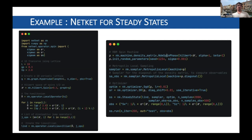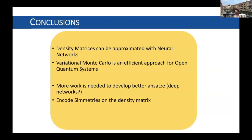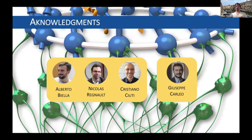In conclusion, density matrices can be approximated with neural networks, and variational Monte Carlo is an efficient approach for these systems, even if many improvements can be made on the method. More work is surely needed to develop better ansätze — particularly it would be nice to use deep networks while keeping positive definiteness — and we still need to start encoding symmetries on the density matrix, and explore autoregressive models among other things. I would like to thank my collaborators on the work I showed you, from universities in the Paris region, and also Giuseppe, with whom I've been working a lot recently. Thank you.